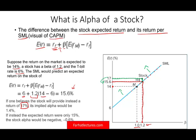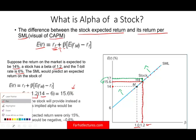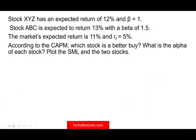Let's assume the expected return is only 15%. So let me do this in a different color. If the expected return is, let's say 15% is here, let me go back. 15% will be right here.